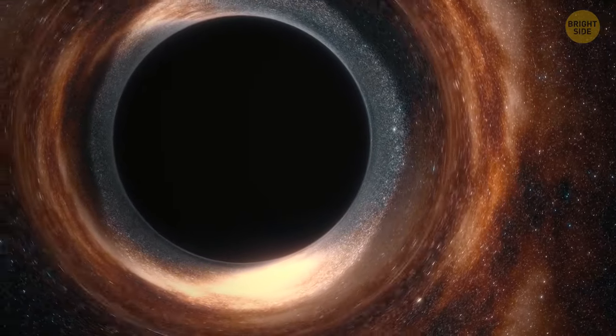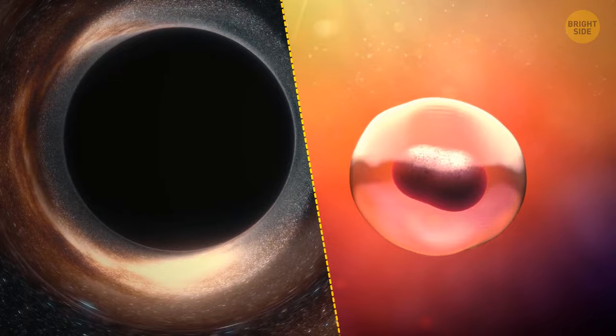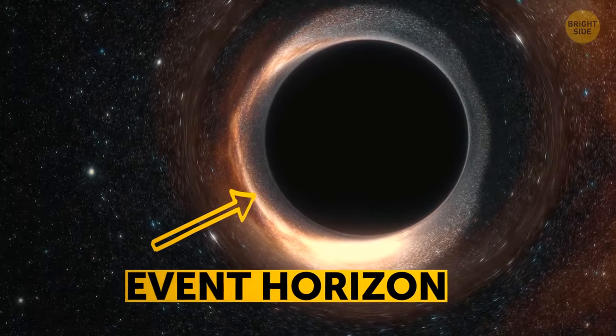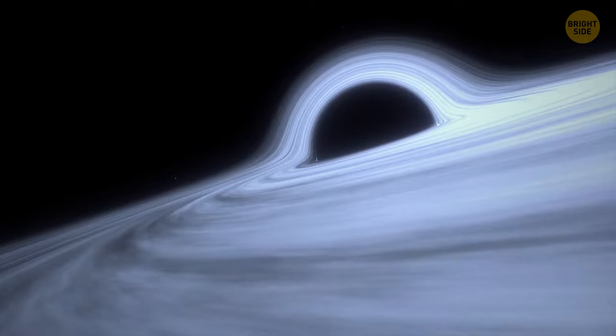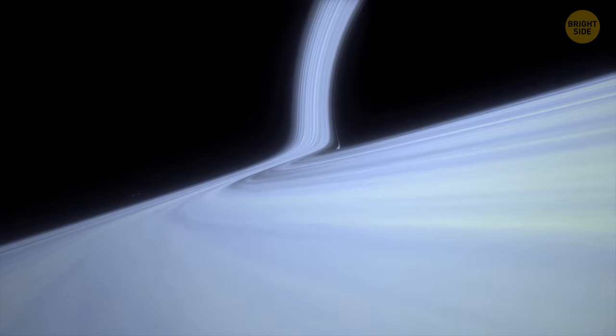Black holes don't have physical boundaries like a membrane either. The event horizon, which is closest to a typical boundary, is a threshold which, after passing, you can't get out.